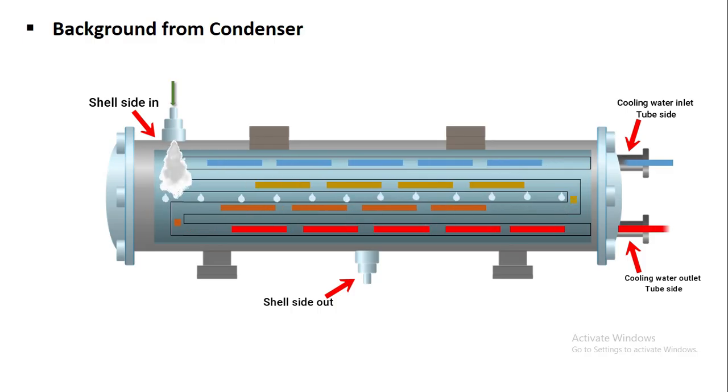The water in the tube absorbs heat from the high temperature high pressure vapor in the shell due to which the tube water gets heated. The primary function of cooling tower is to cool this heated water.